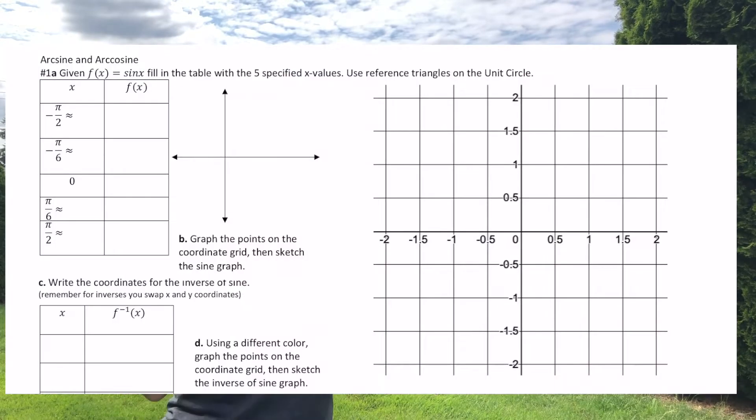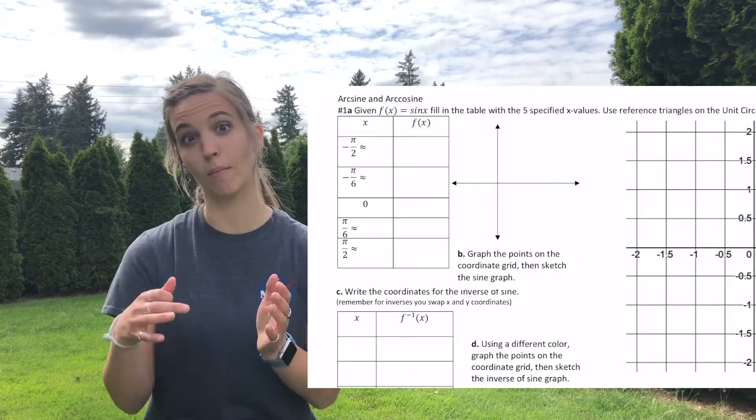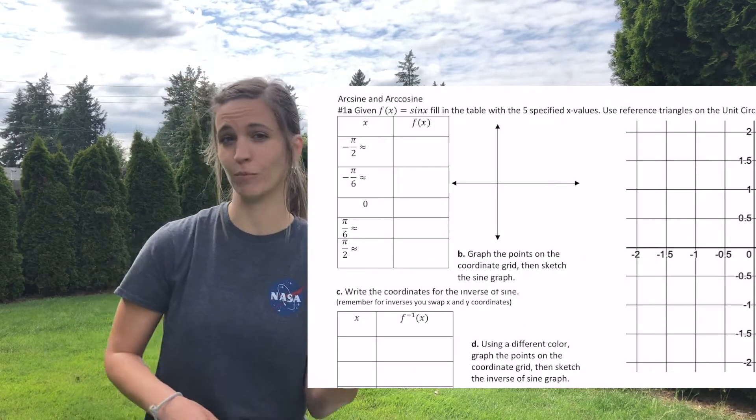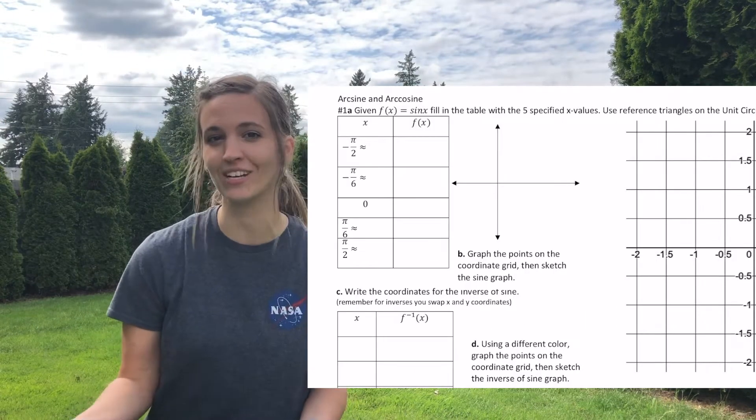So given f of x equals sine of x, we're going to go ahead and plug in our points to create a table, and then plot those points on a coordinate grid that goes from negative 2 to 2 in the x direction, negative 2 to 2 in the y direction.